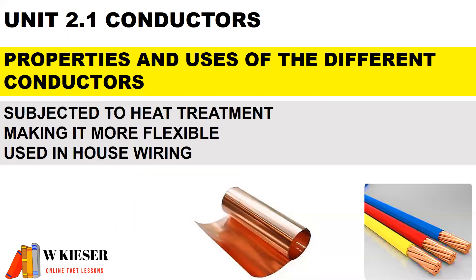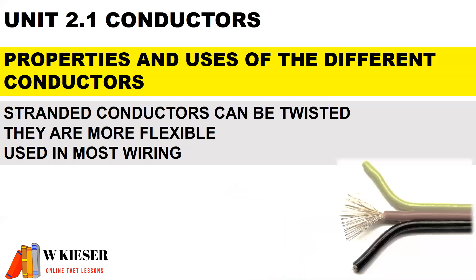For annealed copper, it is subjected to heat treatment, making it more flexible, and is found in house wiring. Stranded conductors can be twisted — they are more flexible and used in most wiring applications.